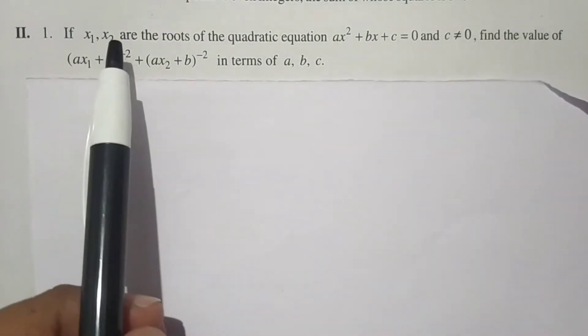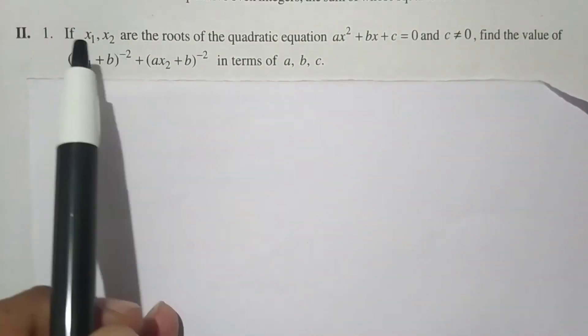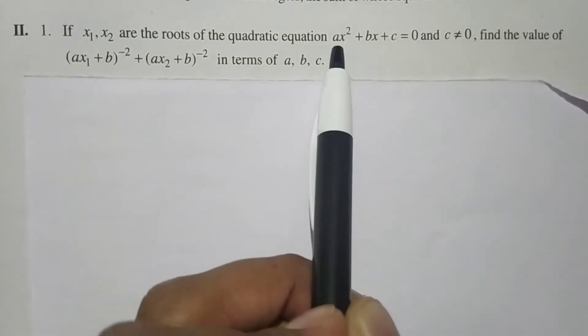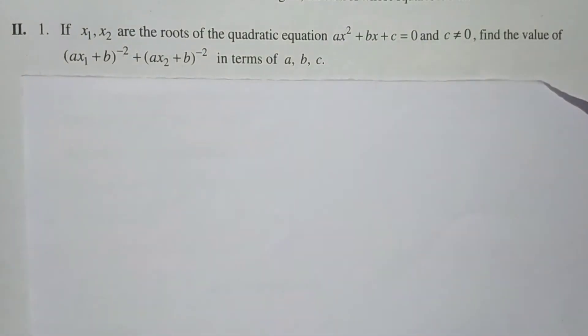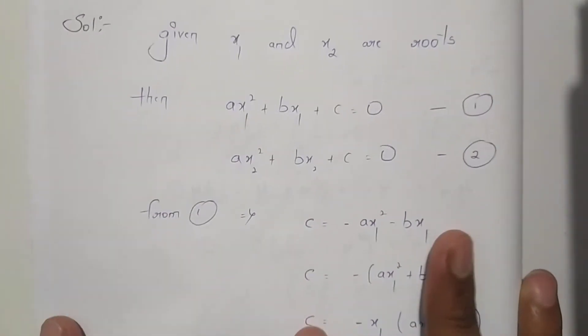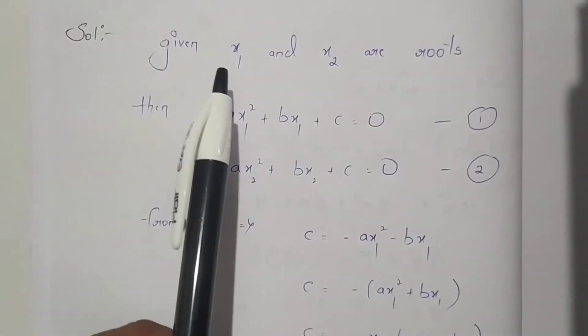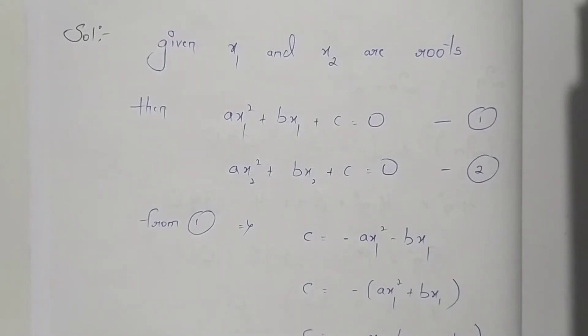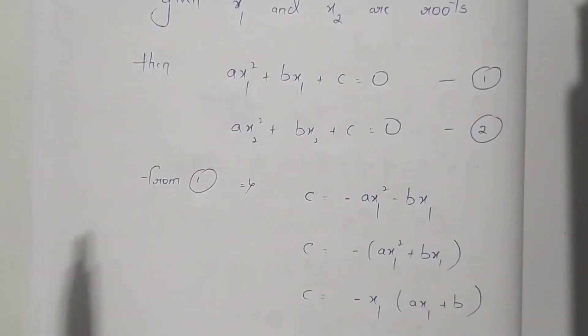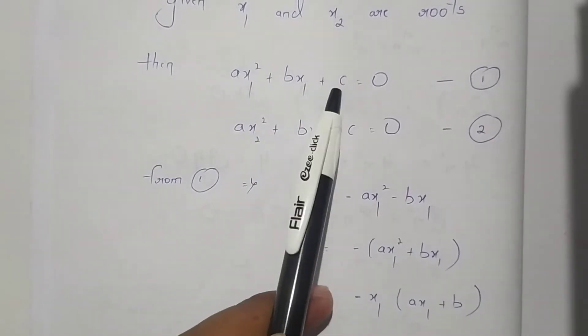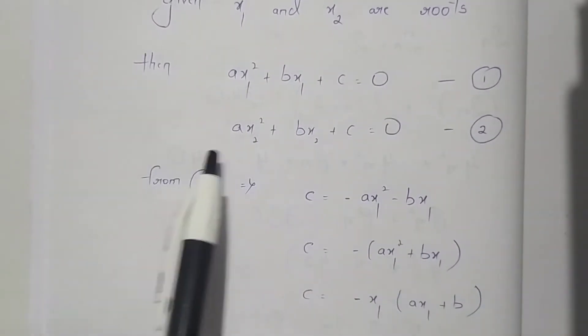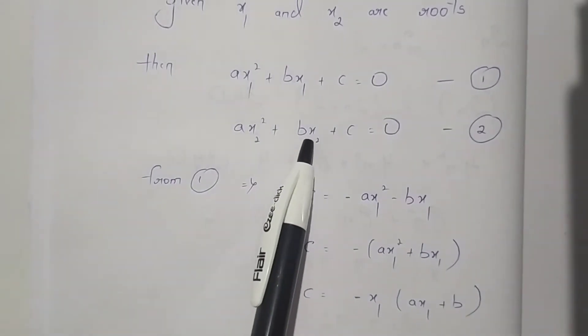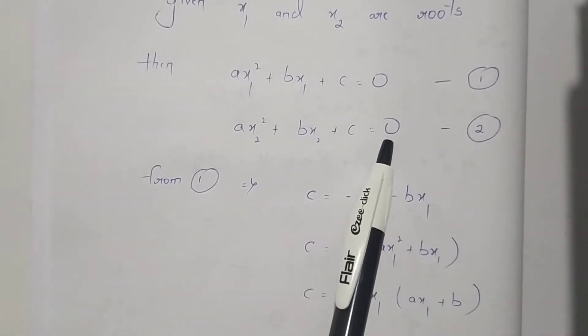Since x₁ and x₂ are roots, they must satisfy the equation. Substituting x₁ and x₂ into ax² + bx + c, we get equation 1: ax₁² + bx₁ + c = 0, and equation 2: ax₂² + bx₂ + c = 0.